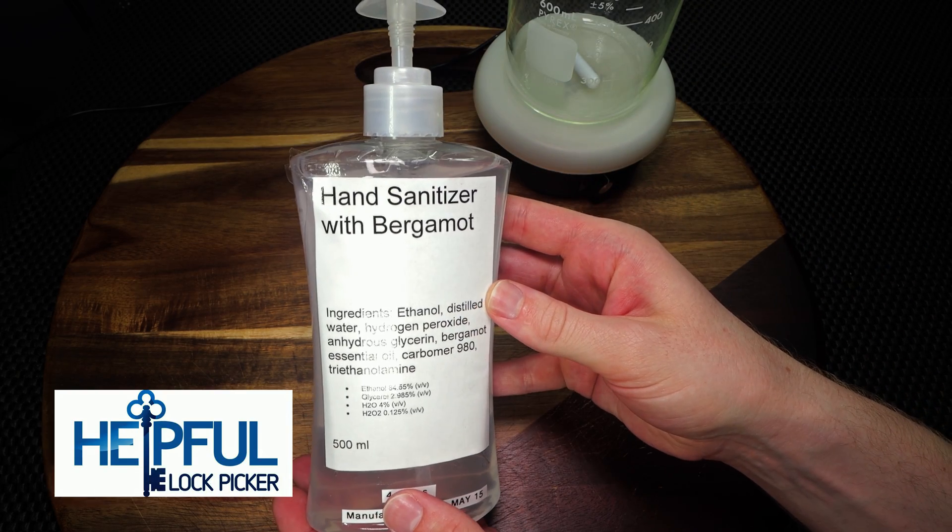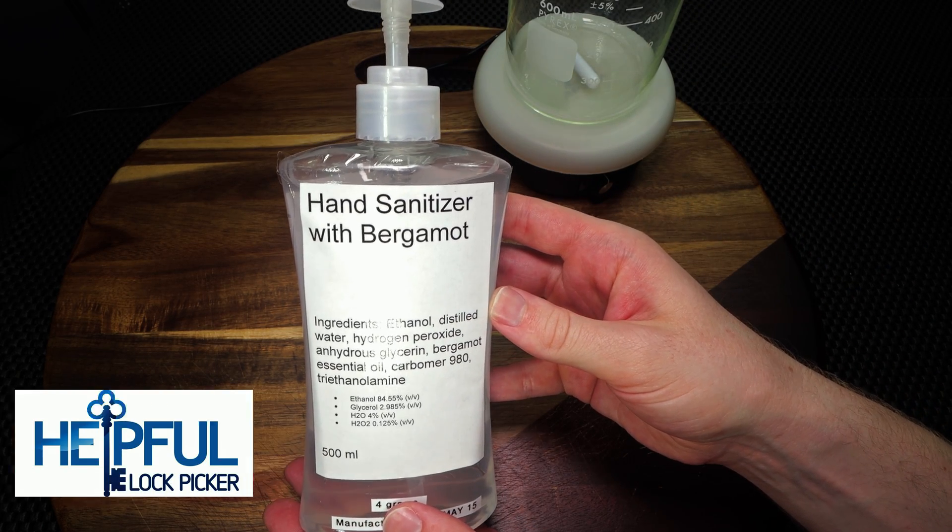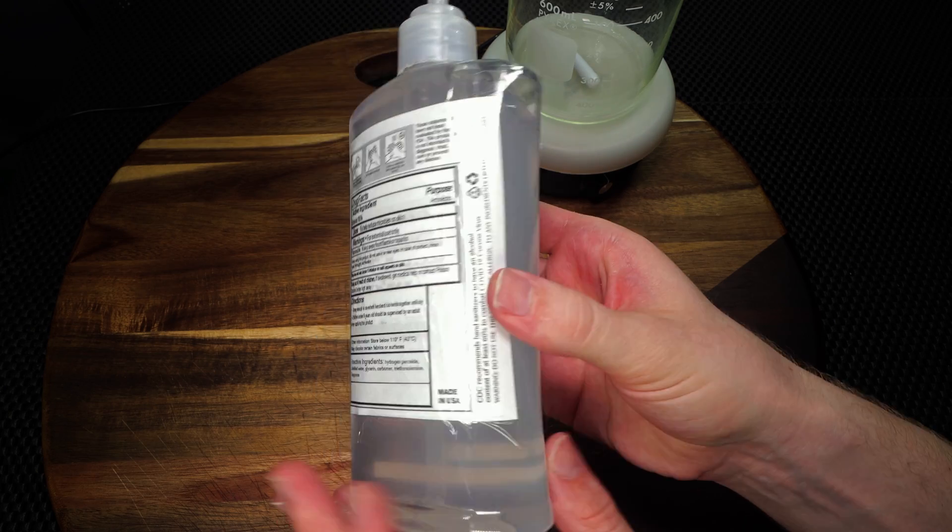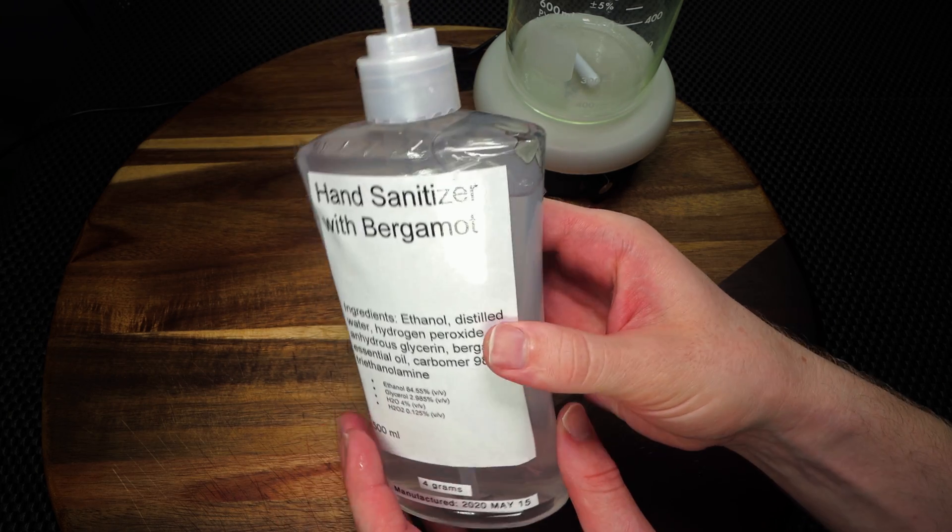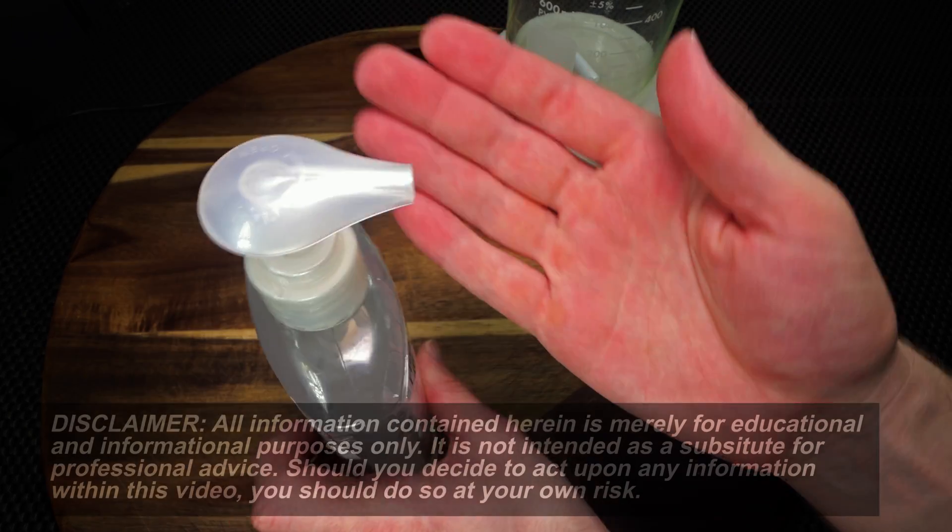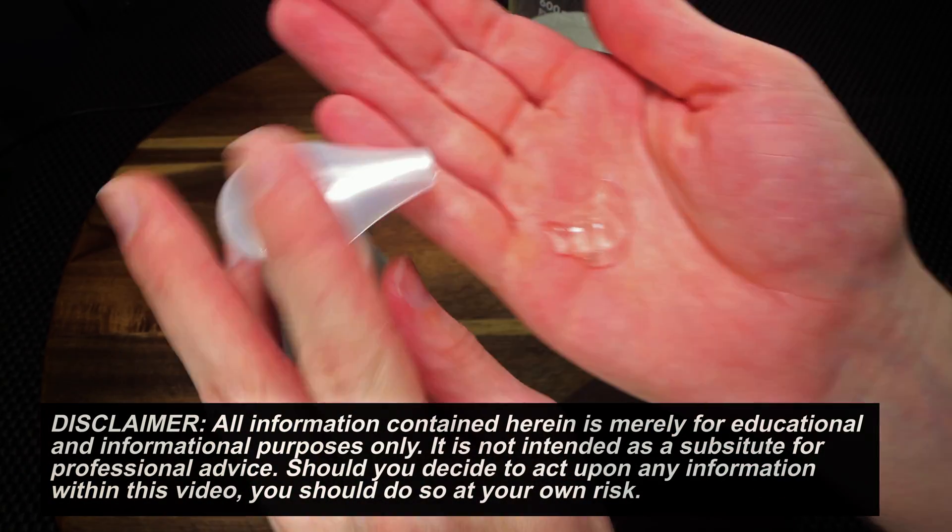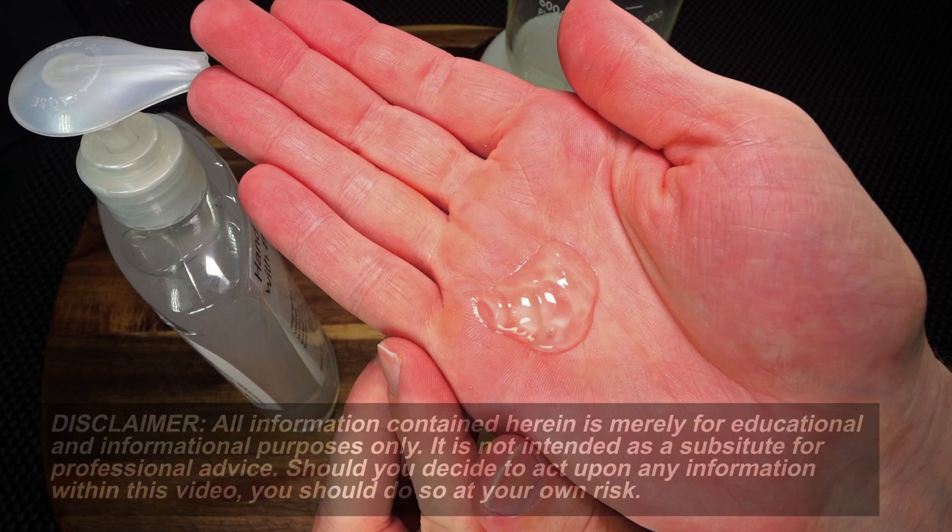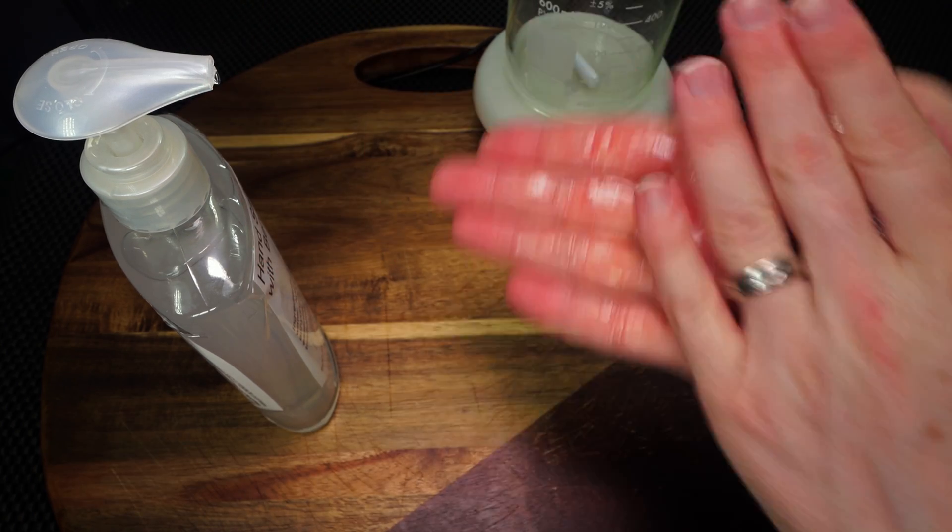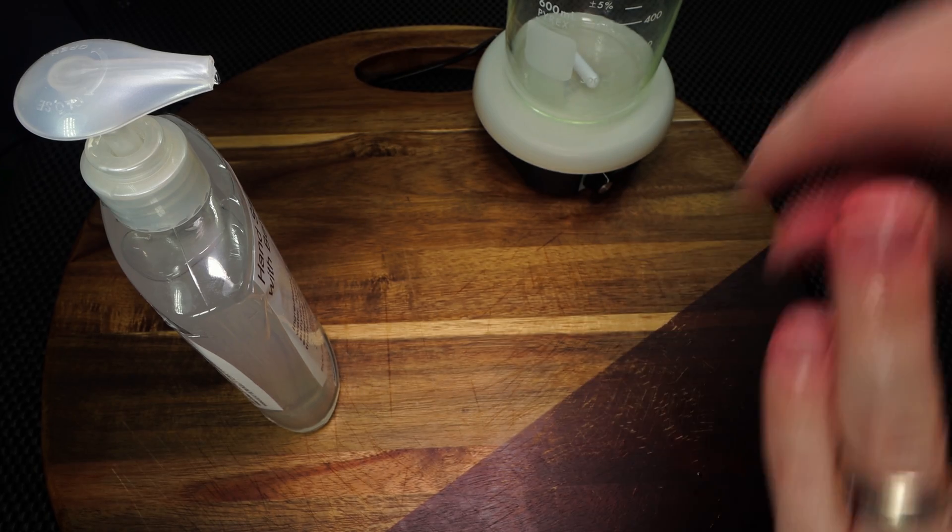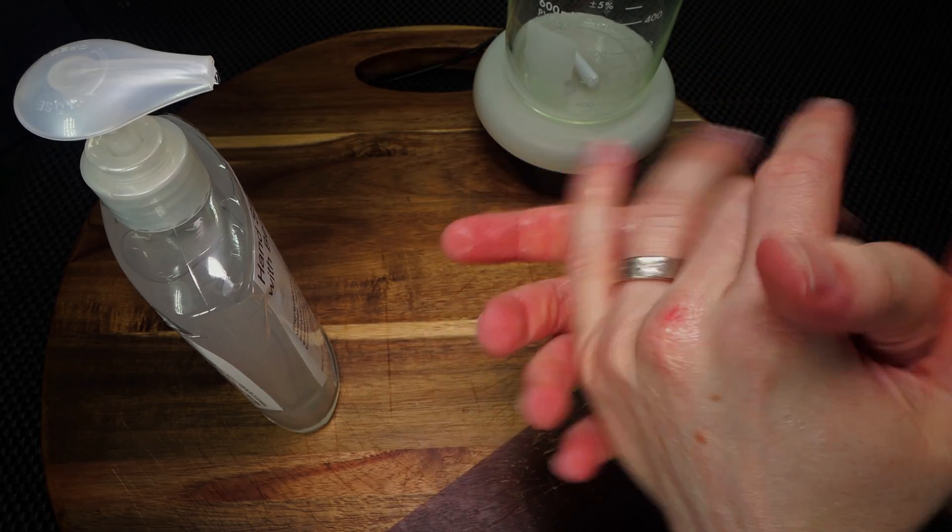Hey guys, how's it going? It's Helpful Lockpicker here. In the video I have for you today, I'm going to be going over how you can make a gel hand sanitizer at home. It can be very frustrating when you're not able to buy it at the store. I'm going to teach you how to do this in a few quick, easy steps. This makes a really nice consistency. It's nice and clear, and it's plenty strong and works very well. Without further ado, let's get started on how to make a gel hand sanitizer at home.